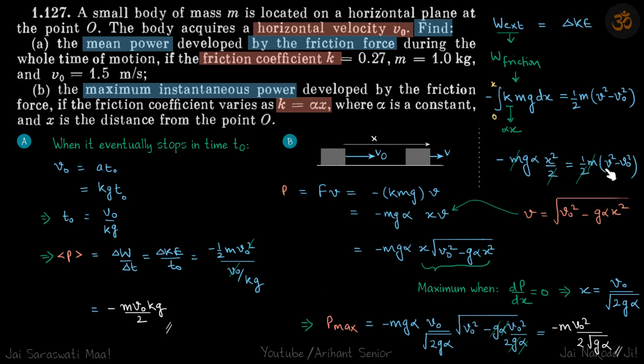Now we have velocity as a function of x, so we'll put that here. We have found the power as a function of x, and we need to find the maximum instantaneous power, so we'll differentiate this. When we do that, we get at x equals v₀ divided by root 2gα, dP/dx is zero. When we put this value, we get our maximum instantaneous power.